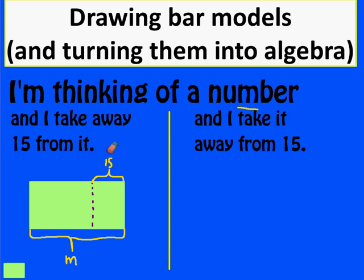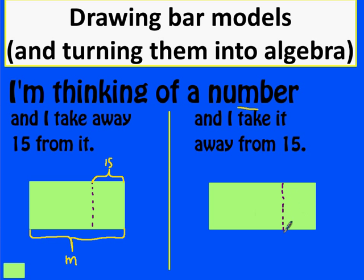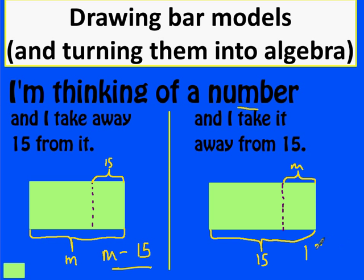New example: I have a number and I take it away from 15. The key difference this time is that the bit we're taking away is the number we're thinking of — so that part is M and the whole thing represents 15. The algebraic expressions are: M take away 15 for the first, and 15 take away M for the second. Subtle but important — only when M equals 15 do these give the same answer.